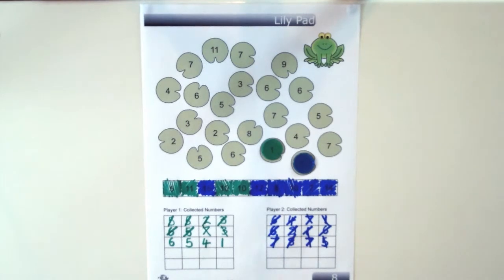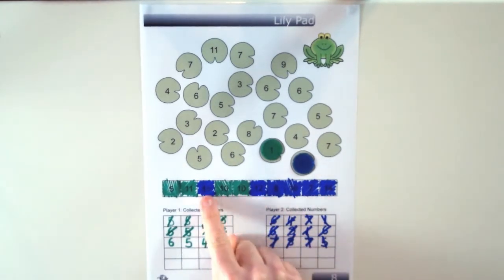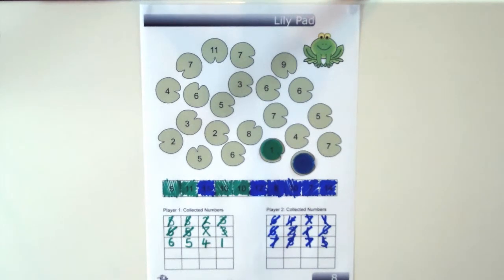So blue has won this game because they've got 1, 2, 3, 4, 5, 6 target numbers. Whereas green only has 1, 2, 3, 4.